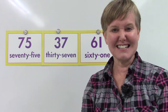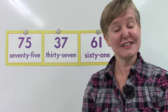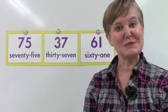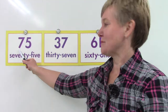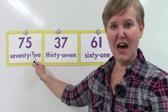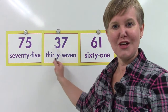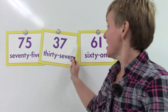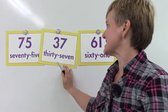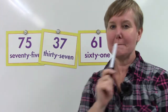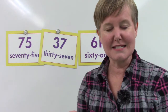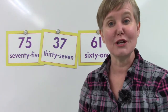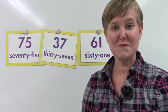Let's take a look at these three numbers. Behind me I have the numbers 75, 37, and 61. Which one is the smallest number?